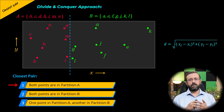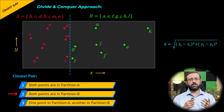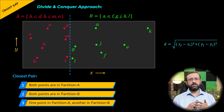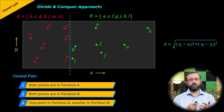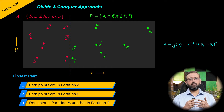The closest pair in category 1 can be determined by finding the closest pair recursively on partition A, and the closest pair in category 2 by finding it recursively on partition B. This is the conquer phase. We recursively divide partition A and partition B into smaller partitions and find distances using the Euclidean distance formula. However, to determine the closest pair in category 3, we need a different approach.